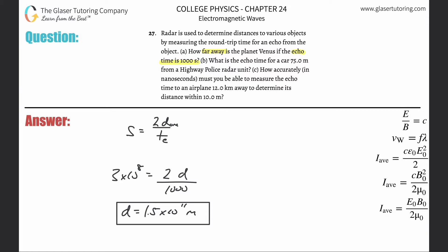So that takes care of letter A. Letter B: What is the echo time for a car 75 meters from a highway police car radar unit, or police radar unit? So this is now going to be same formula, 2 times the one-way distance, all divided then by the echo time.